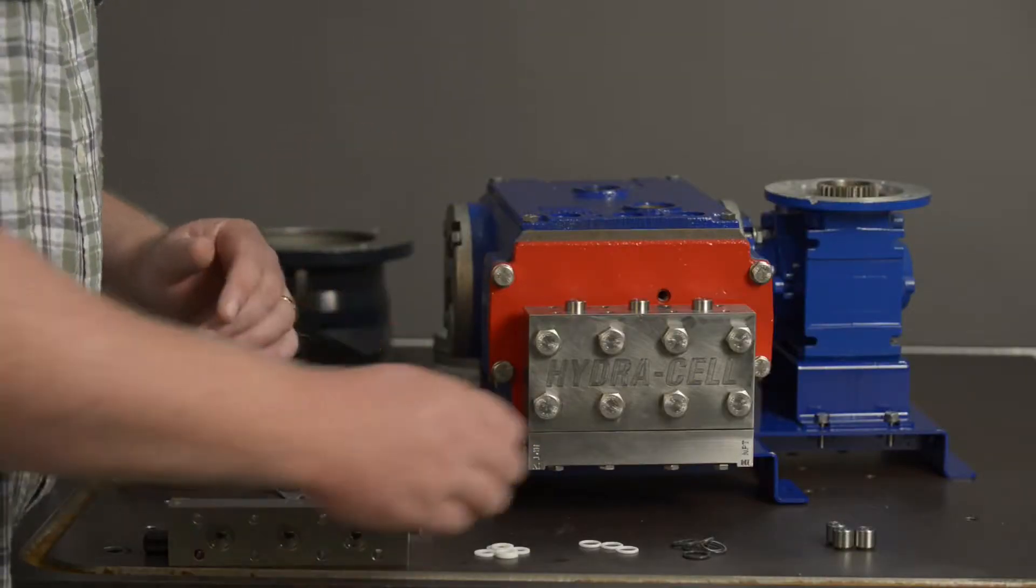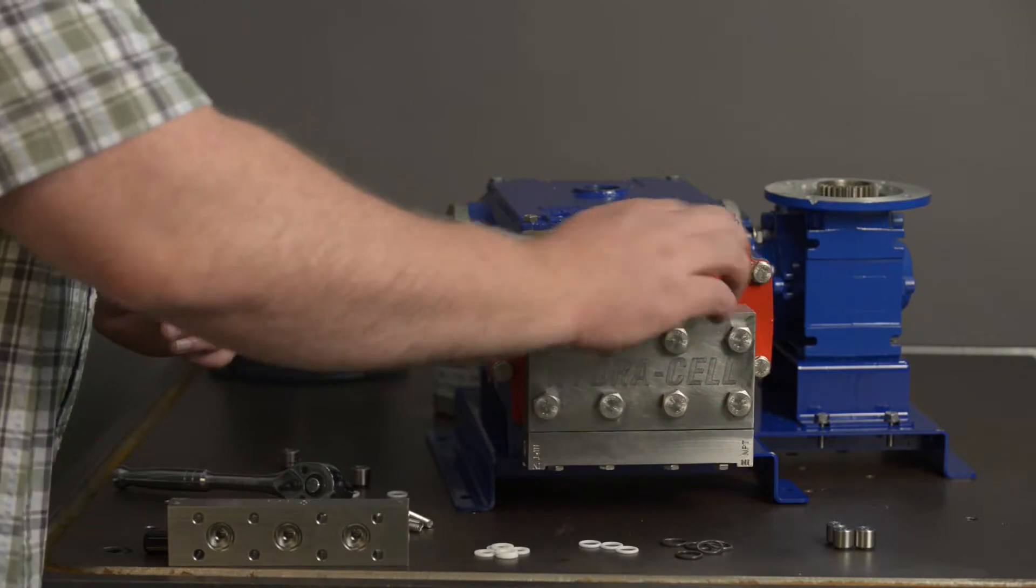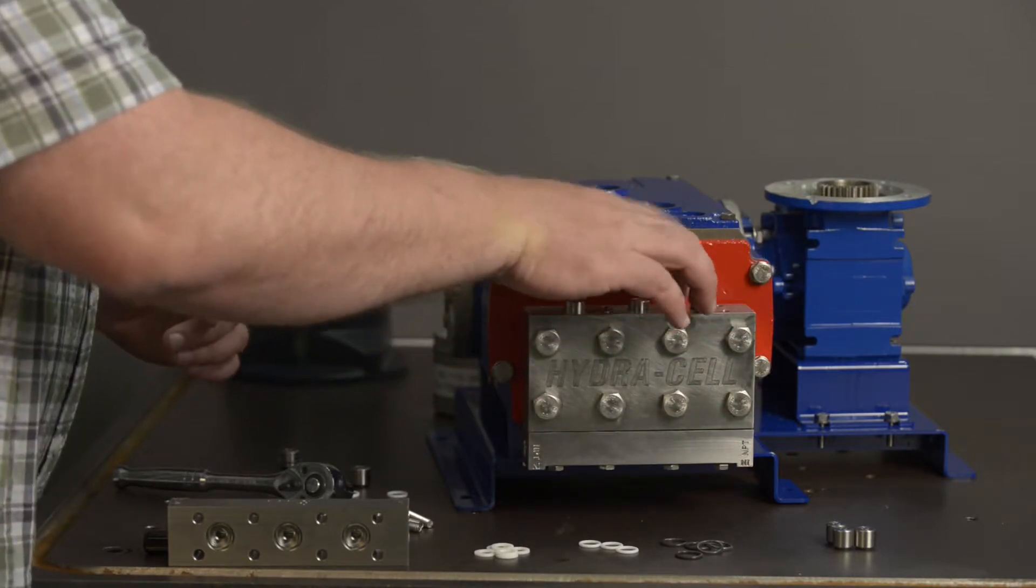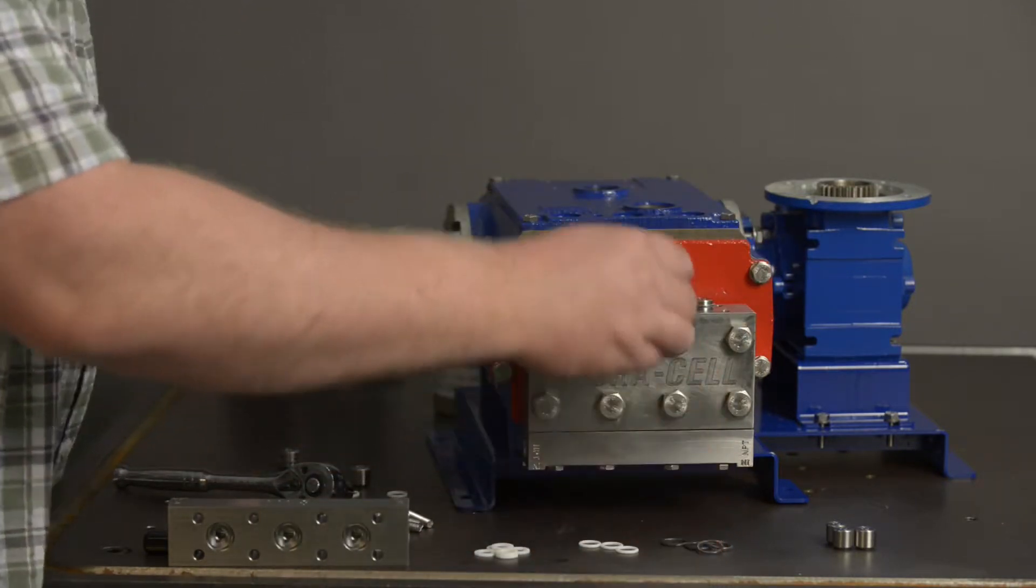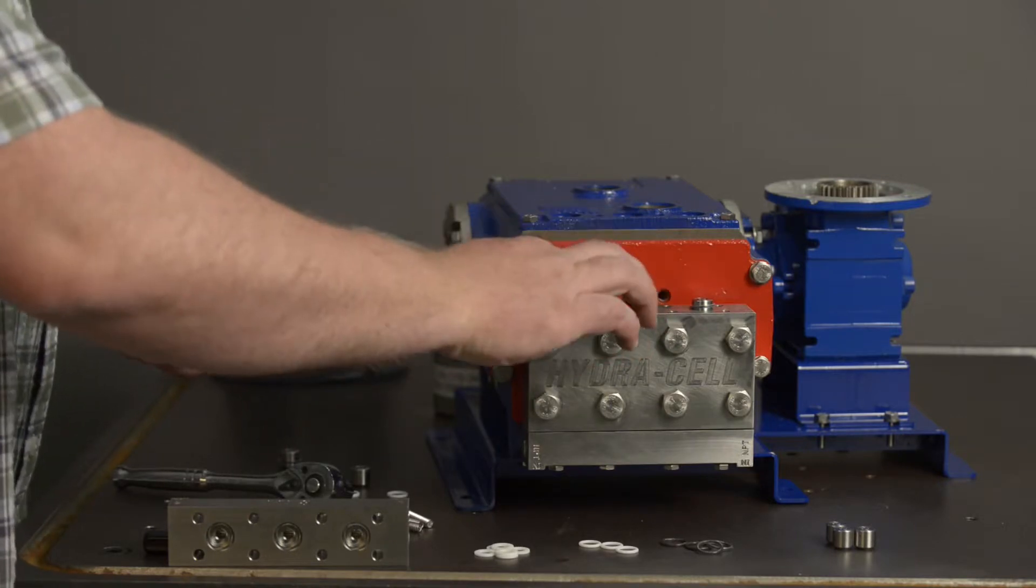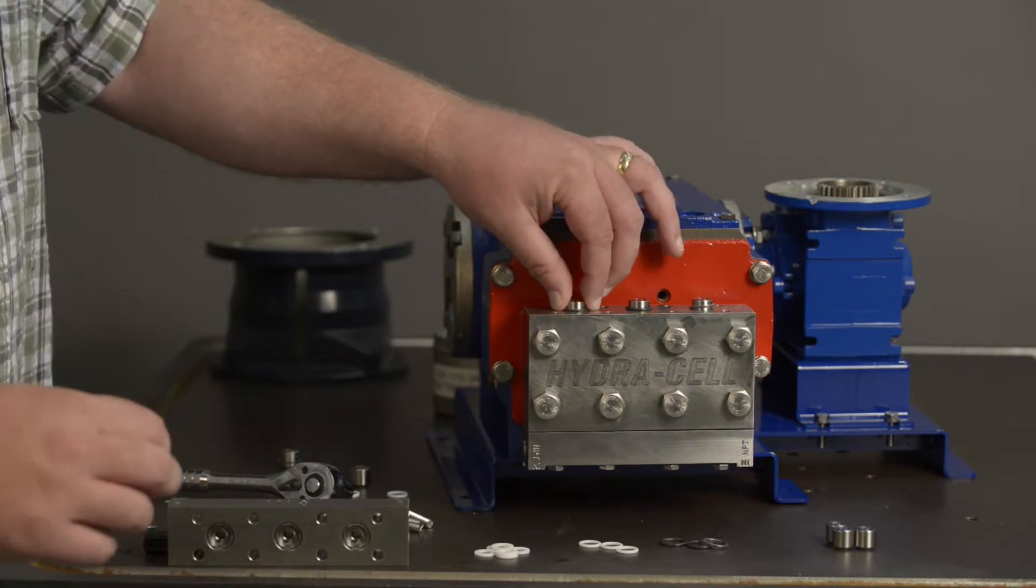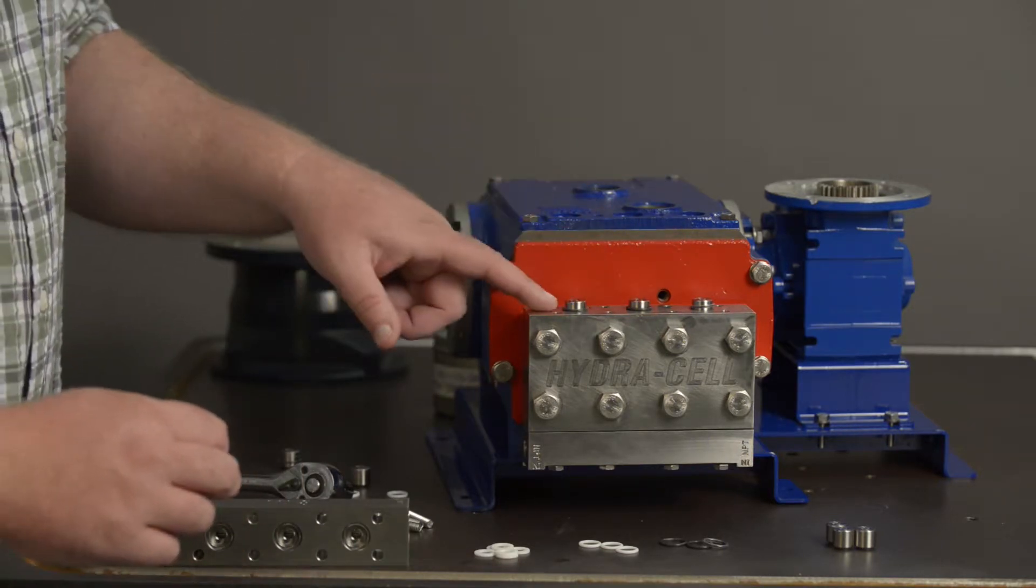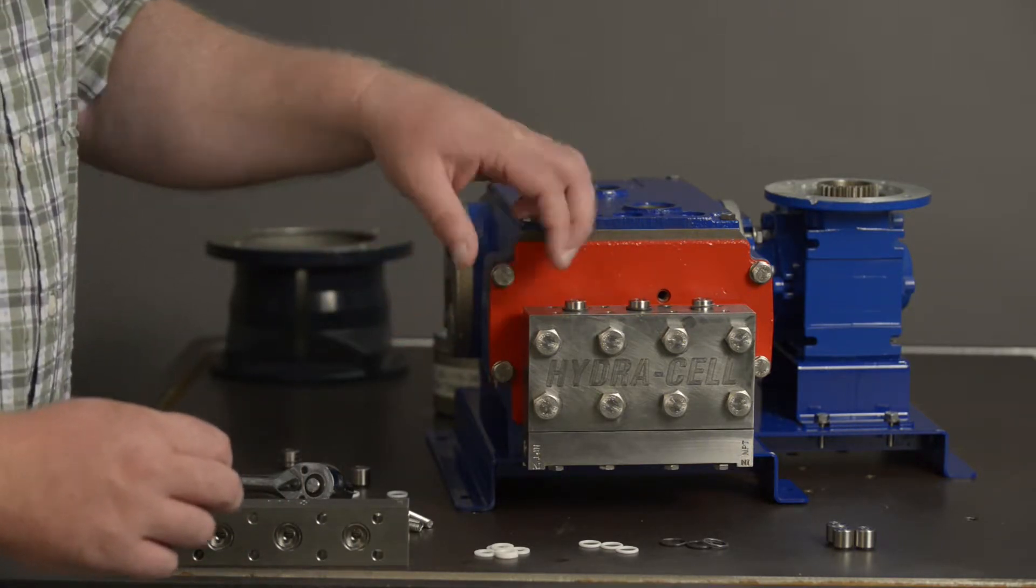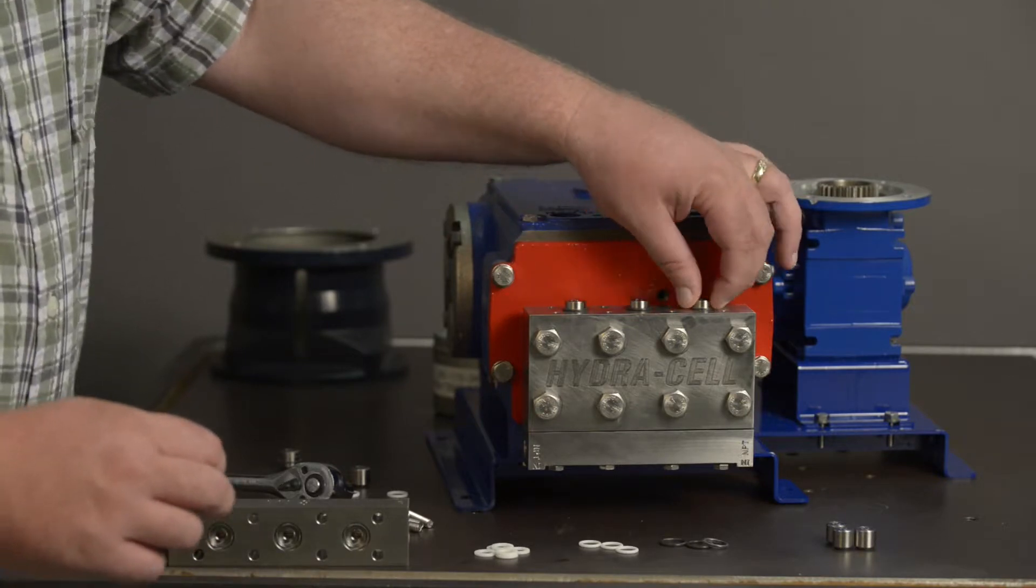The next step, another critical step, is to make sure that your PTFE encapsulated o-rings are installed around each one of the check valves. Don't just set them on top of the check valve. Make sure that they are at least around the diameter of each one of the check valves.